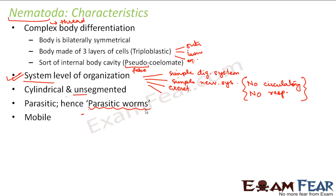They are mobile — capable of moving from one place to another. As I said, these are pseudocoelomate, meaning they do not have a true internal body cavity. Why is the body cavity not considered a true body cavity? That's because the cavity is not lined with a layer of tissue, hence it is not very distinct. If a space gets lined with a layer of tissue, it becomes very distinct and we say it has a true coelomic cavity. But in nematodes, there is some free space inside the body that is not properly surrounded by a layer of tissue, so it is not very distinct — and that is why they are called pseudocoelomate.